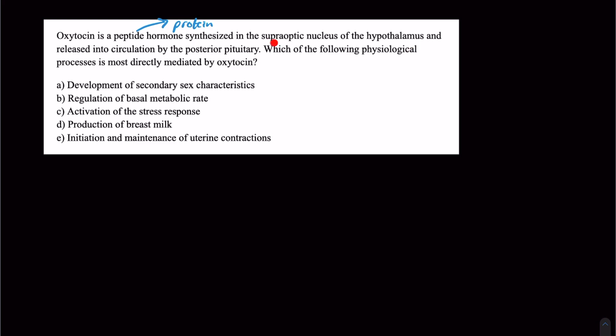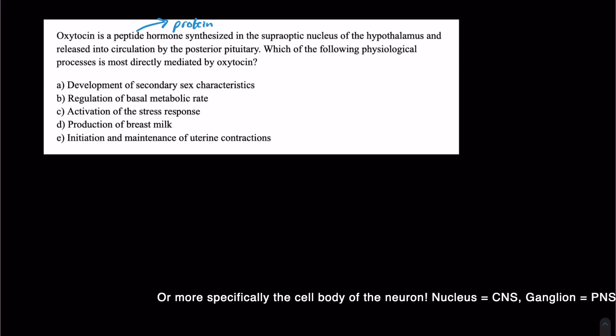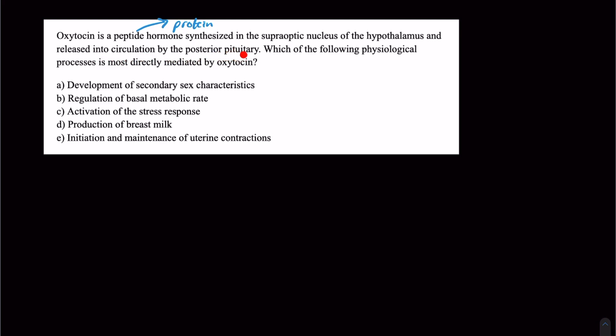So the superoptic nucleus, not as high yield for the MCAT, but that's basically the neuron that's going to be creating oxytocin and that axon that is then going to be traveling down to the posterior pituitary of the hypothalamus and released into circulation by the posterior pituitary, which of the following physiological processes is most directly mediated by oxytocin.